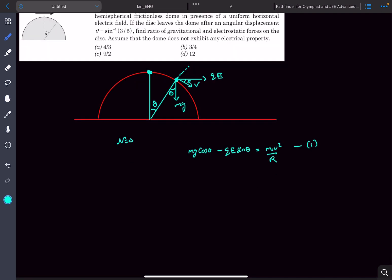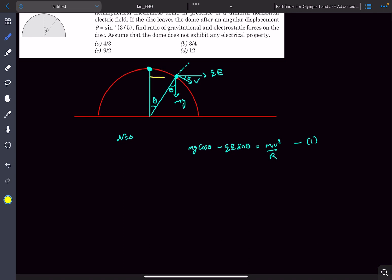Now as we have to eliminate V, we can use energy conservation. So this distance is going to be r sin theta and this distance is going to be r cos theta. So the work done by gravity would be mg times, it descended by a distance of r minus r cos theta.